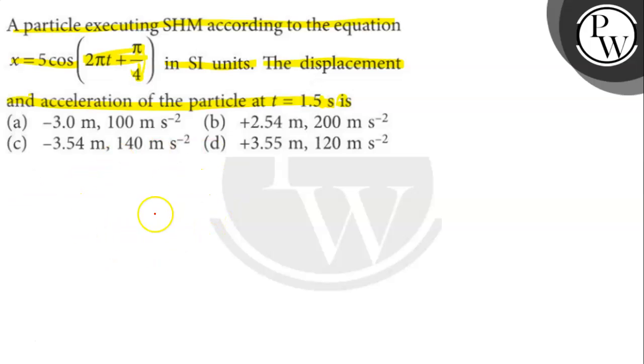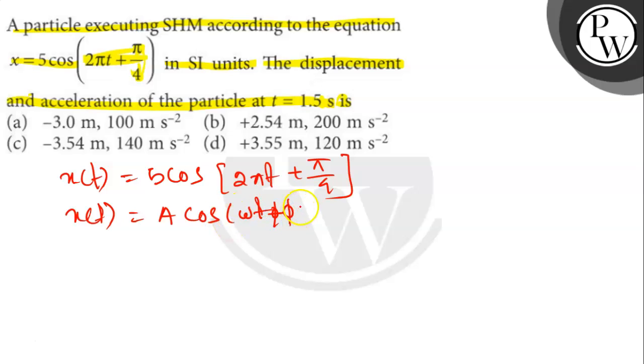The given equation of simple harmonic motion is x(t) equals to 5 cos 2 pi t plus pi by 4. Compare the given equation with standard equation of SHM. So, x(t) equals to A cos omega t plus phi. We get omega equals to 2 pi per second.